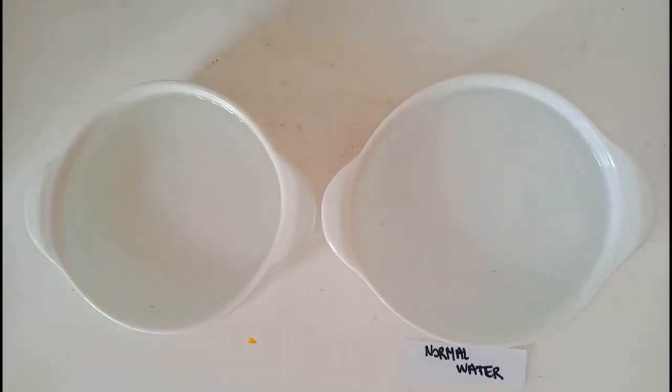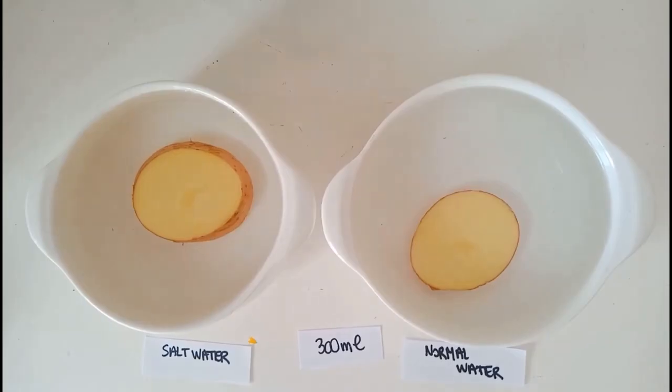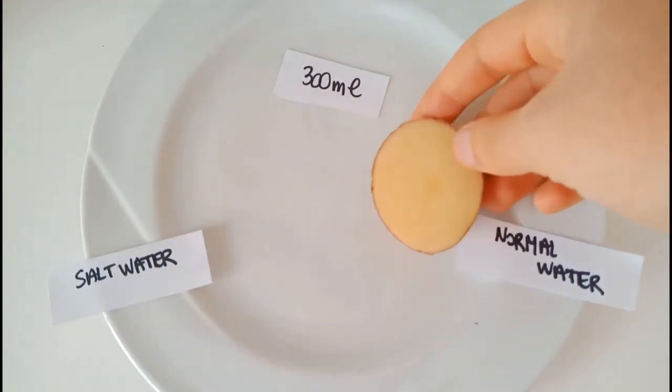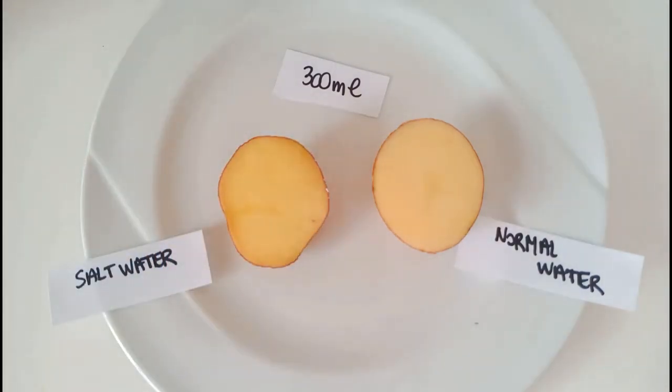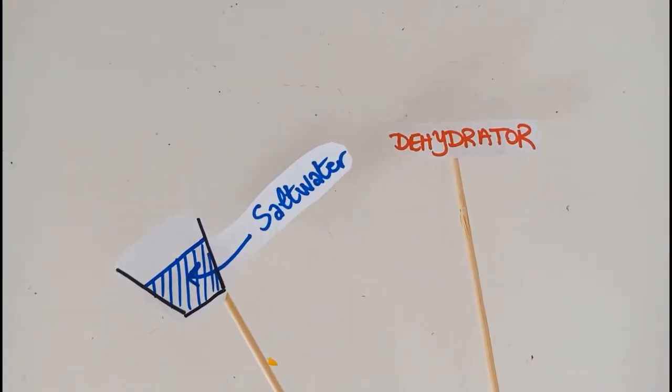We have two dishes, one filled with normal water and another filled with salty water, but the amounts are the same. Then we put the two halves in each dish. After an hour, we noticed that the potato in the normal water didn't change, but apparently the other one became shriveled. So why is that?